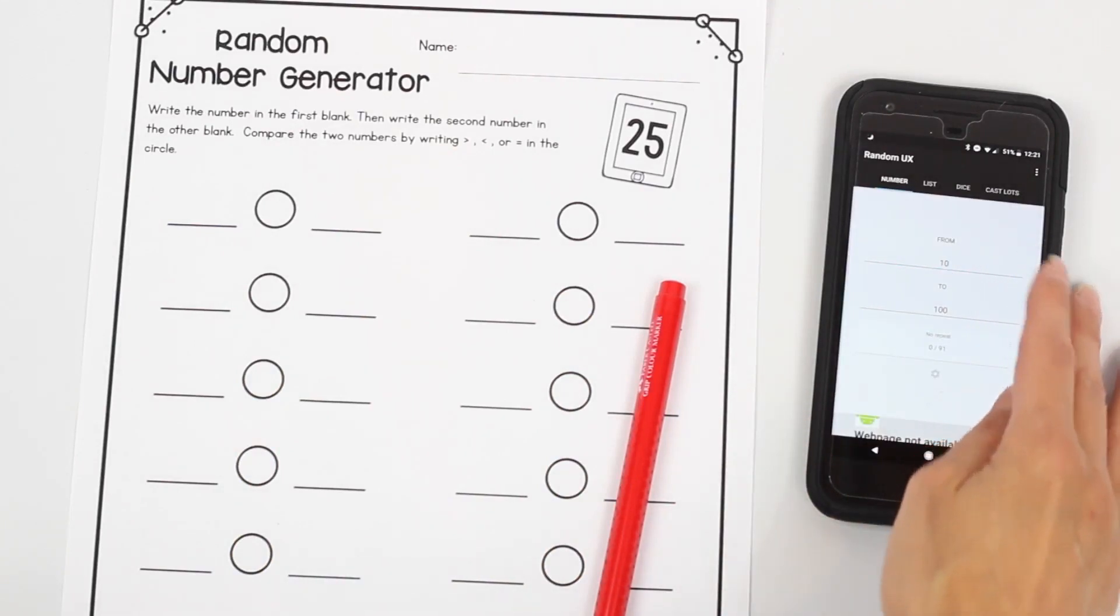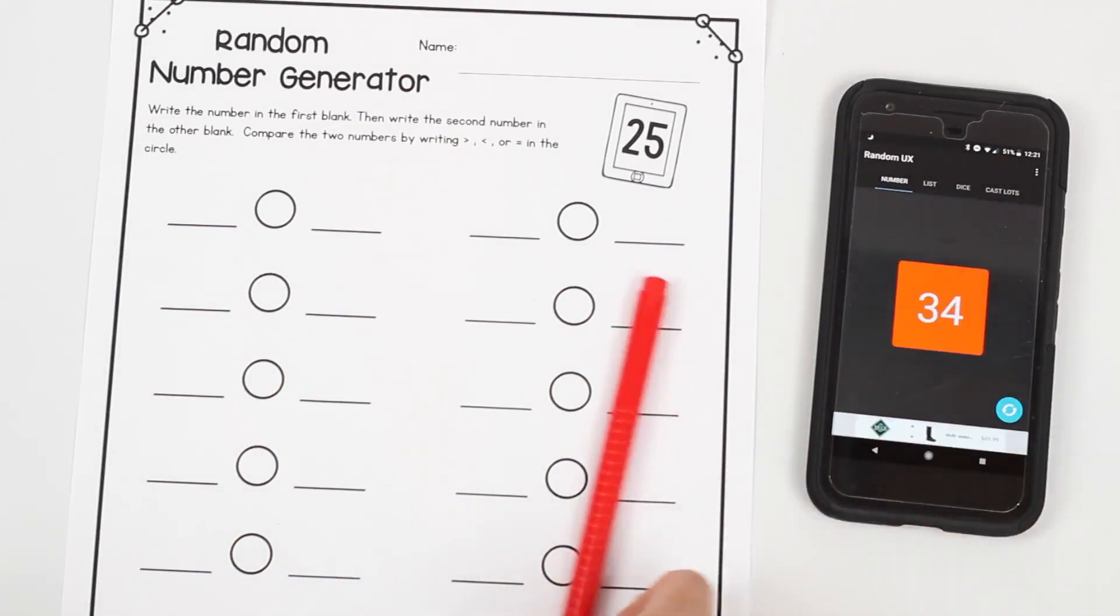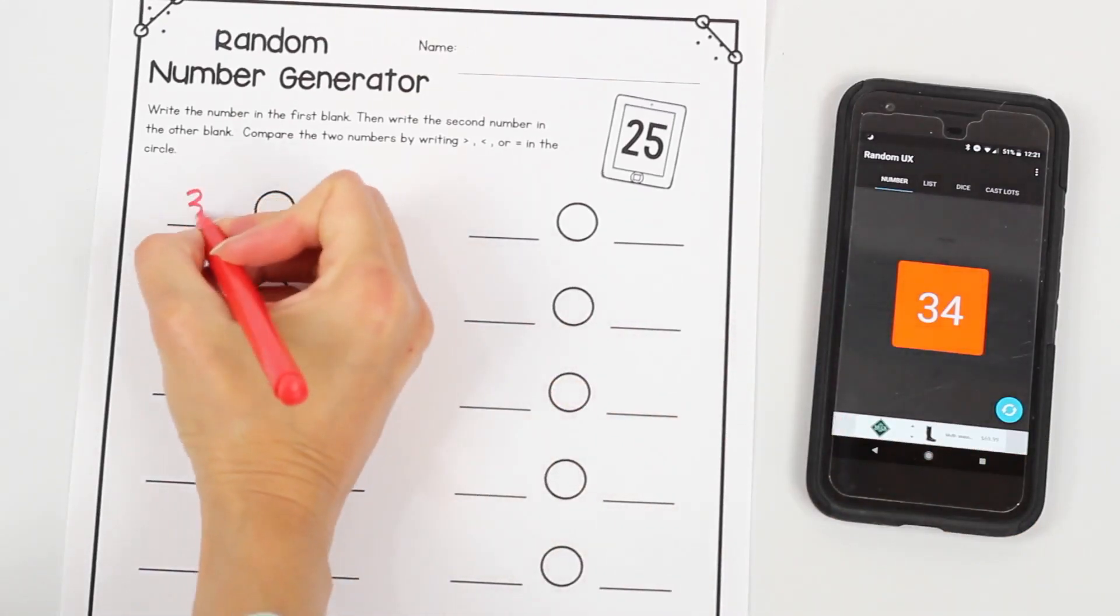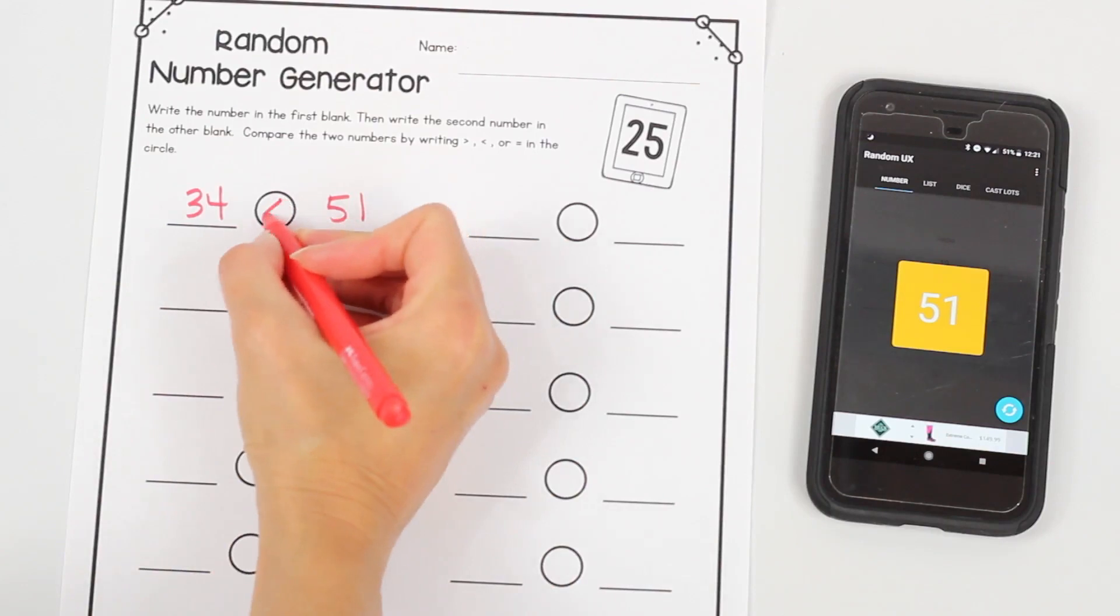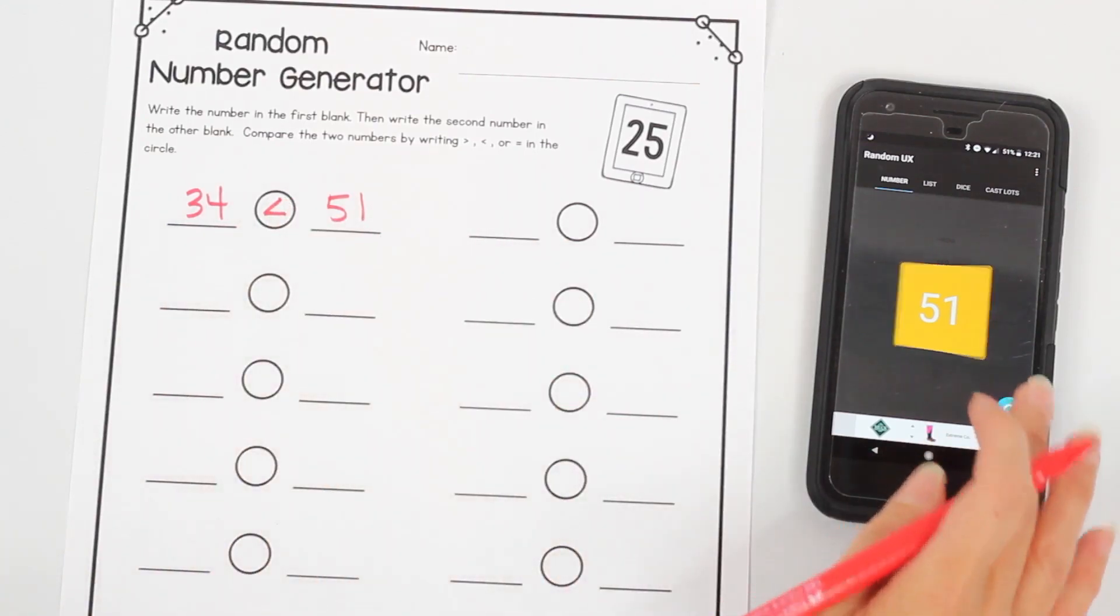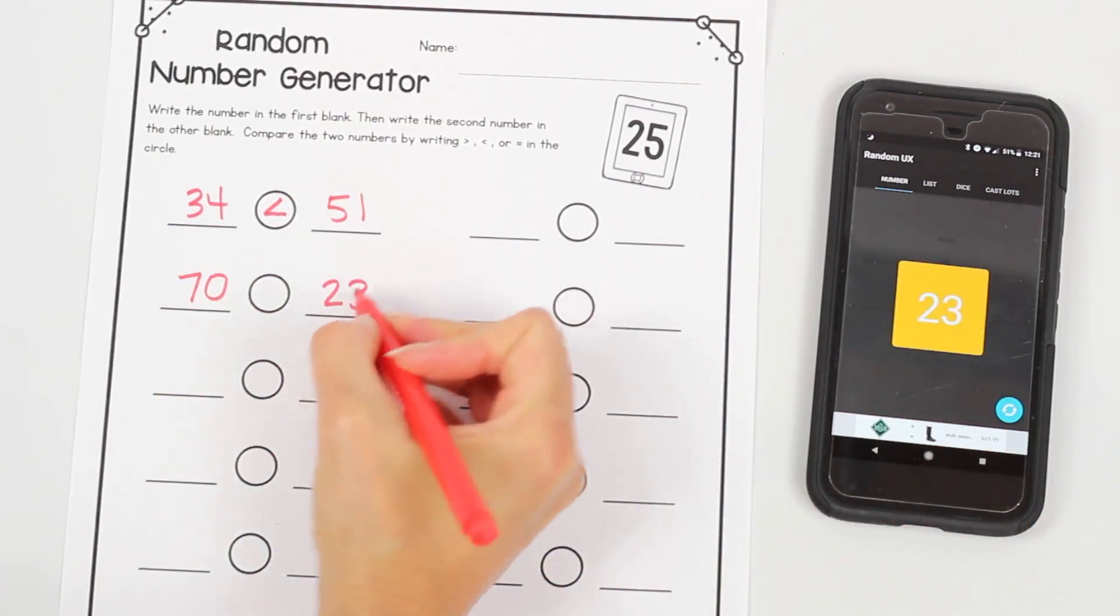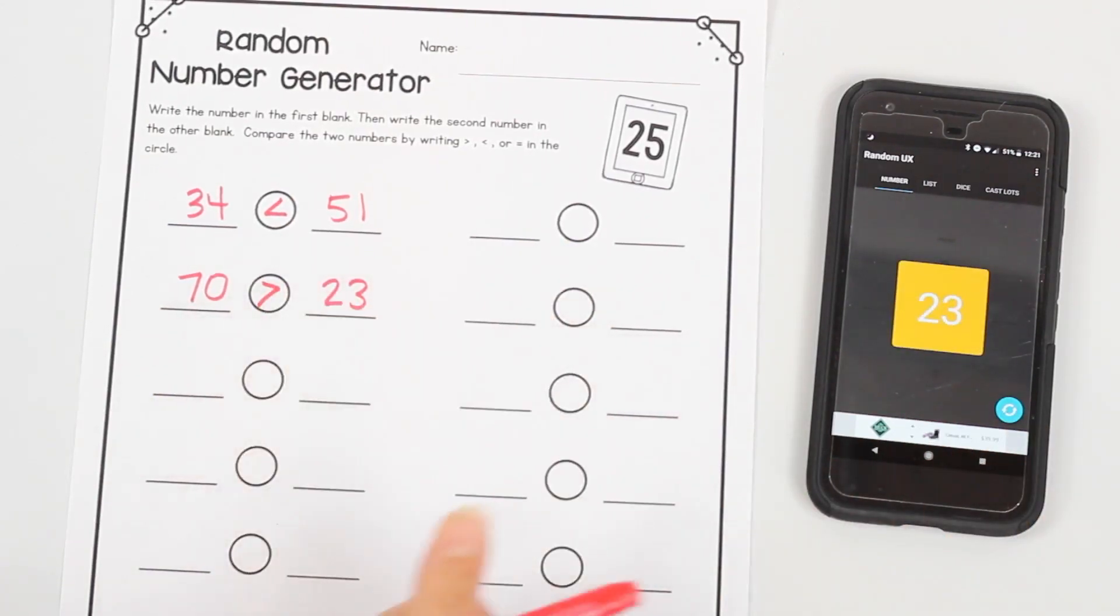But it's just a fun way to generate numbers instead of just going through a boring worksheet. On this app it lets me choose the numbers from and to. So I chose to do from number 10 to 100. And then it generates numbers for me. So I'm going to write the number 34. Hit the button, let it generate another number for me. 51. And then I'm going to compare those. 34 is less than 51. Keep going. 70. Let it generate another number for you. 23. 70 is greater than 23. I find students like this. It's a great way to incorporate technology if you have tablets in your classroom. It's an easy way for students to get involved in their learning and to not just do boring drilling skill.